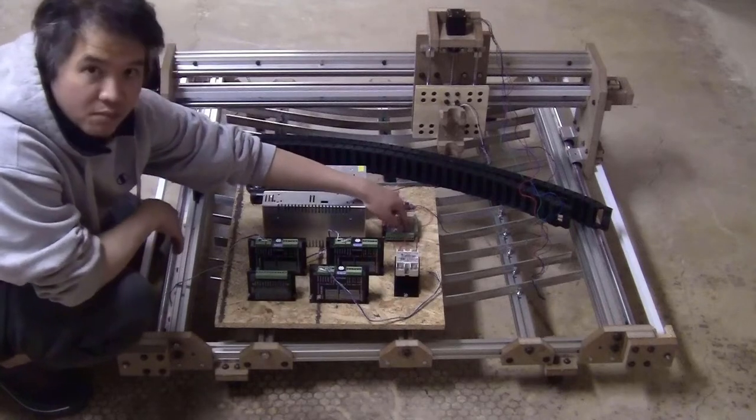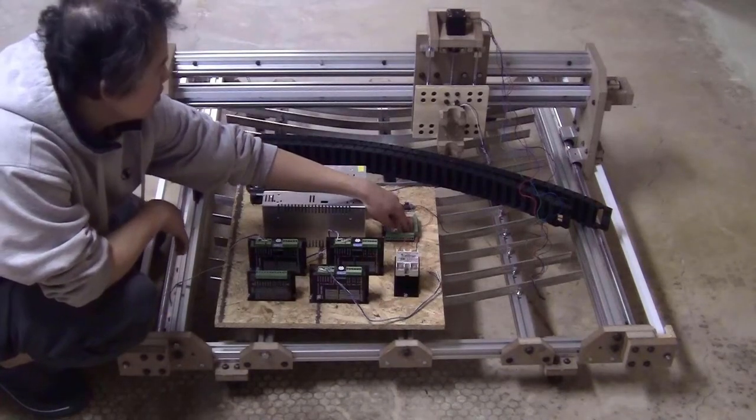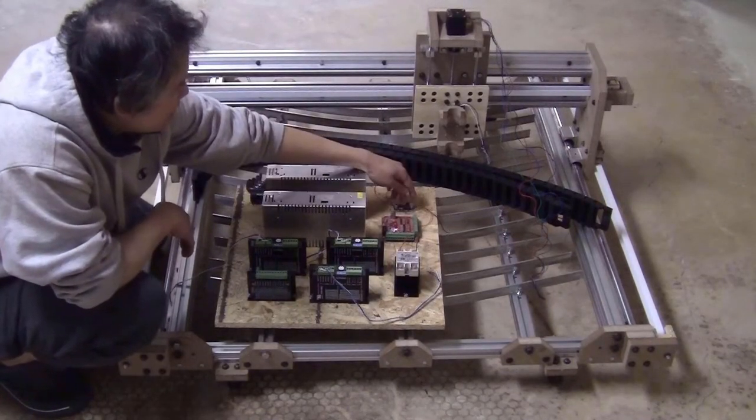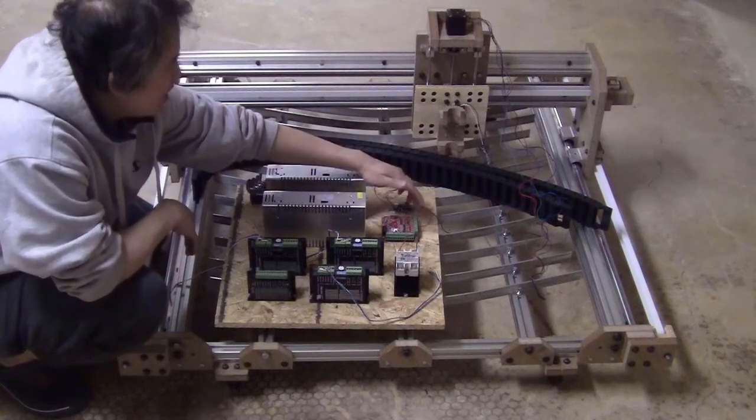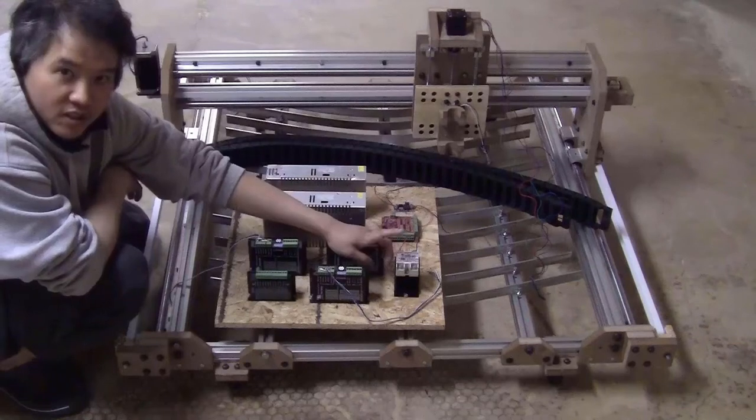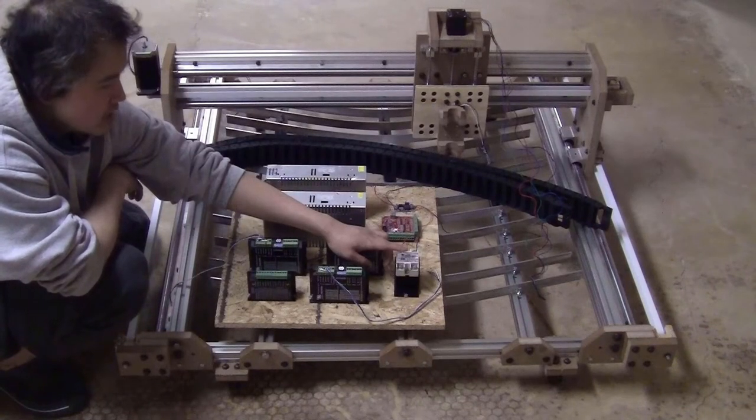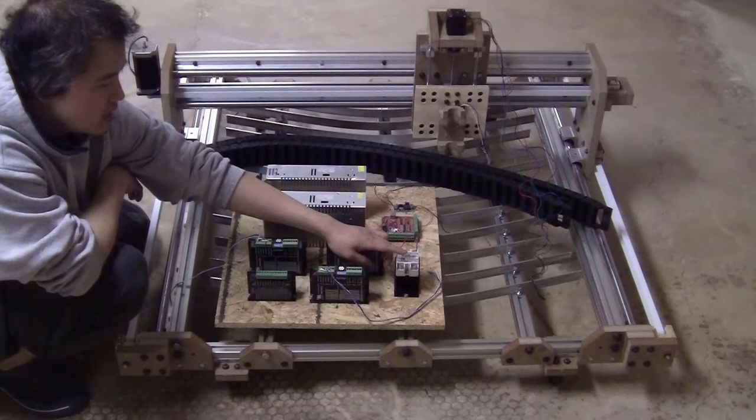This is the control board, INA motion, Mach3 compatible. And this is the DC step down. I'm just going to step down from 36V to 24V to power this board. This is the relay to control the torch, and I will show you the setup and how to make your plasma cutter CNC compatible later.